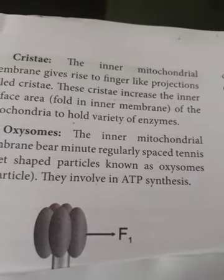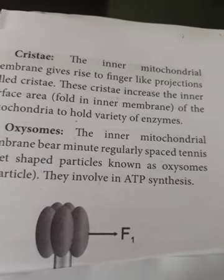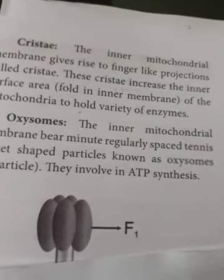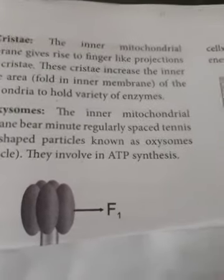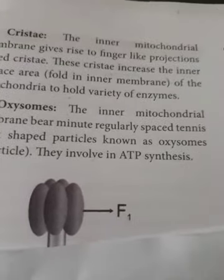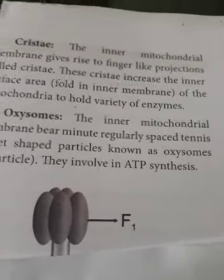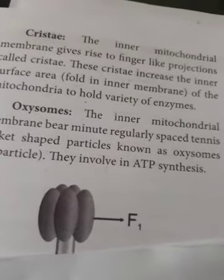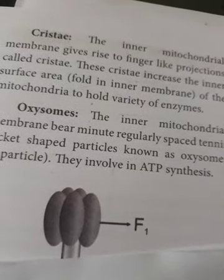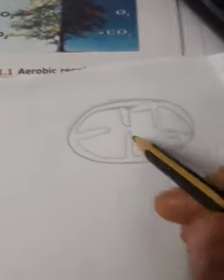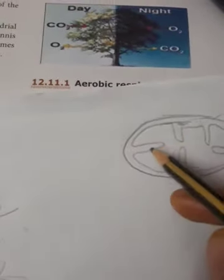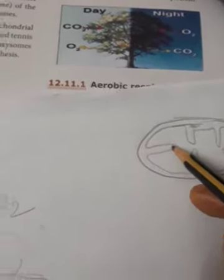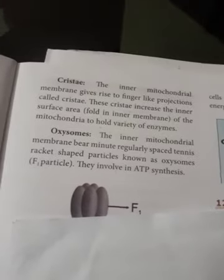Good morning students. We have come to the next part of the structure of mitochondria. We have discussed the outer and inner membrane. The inner membrane gives rise to finger-like projections, as shown in the diagram. These are called the cristae.